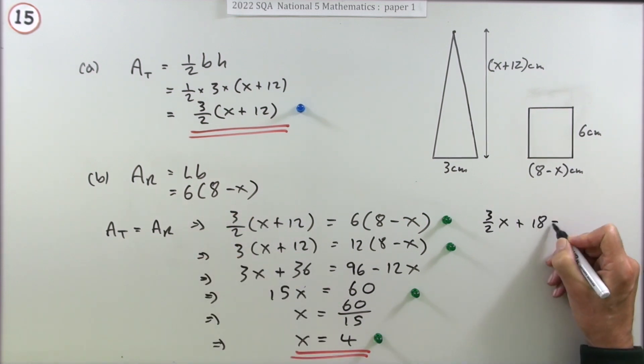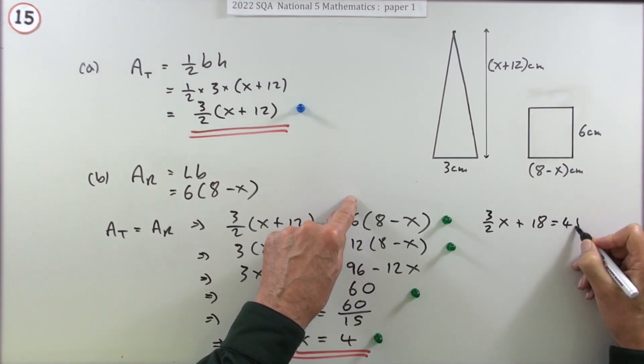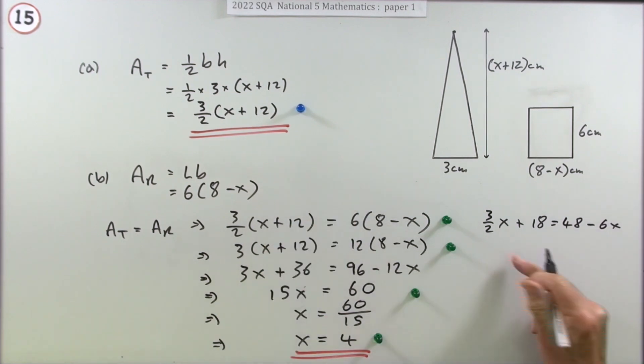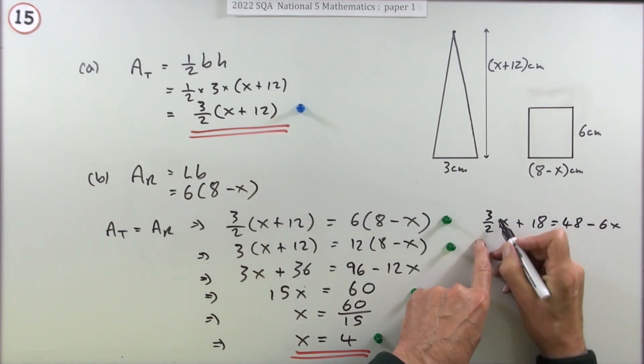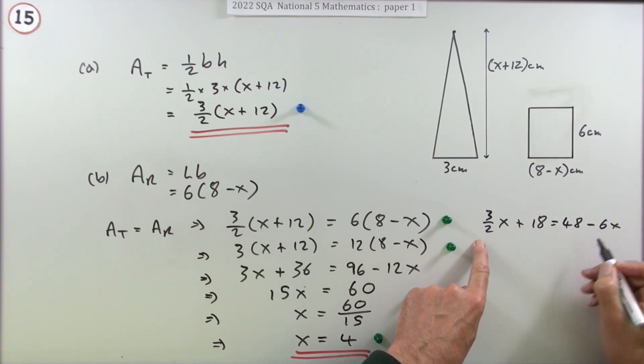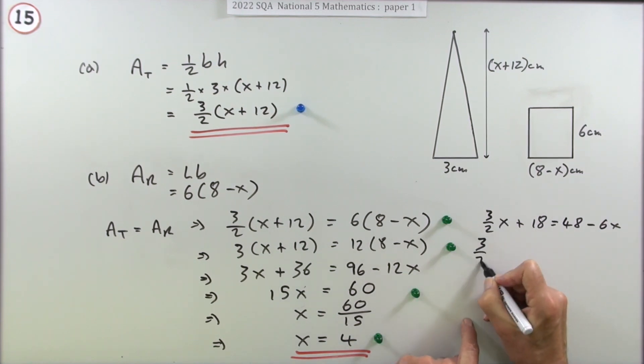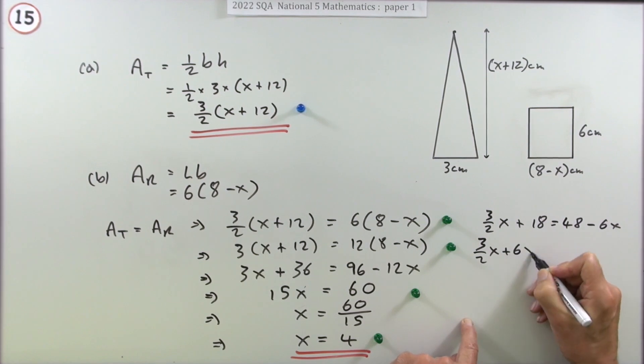Then multiplying this out, that'll be 48 minus 6x. In which case that'd have been the first mark. Then bringing it across, but now you've got 3 upon 2x plus 6x, unless you want to change to decimals.